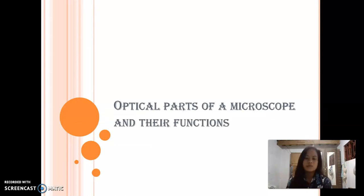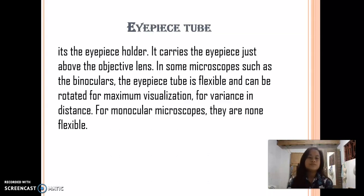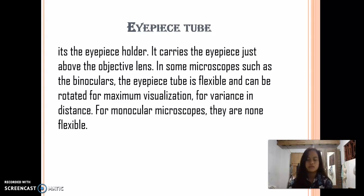Optical parts of a microscope and their functions. Eyepiece, also known as the ocular — this is the part used to look through the microscope. It's found at the top of the microscope. Eyepiece tube — it's the eyepiece holder. It carries the eyepiece just above the objective lens. In some microscopes, such as binoculars, the eyepiece tube is flexible and can be rotated for maximum visualization, for variance in distance.